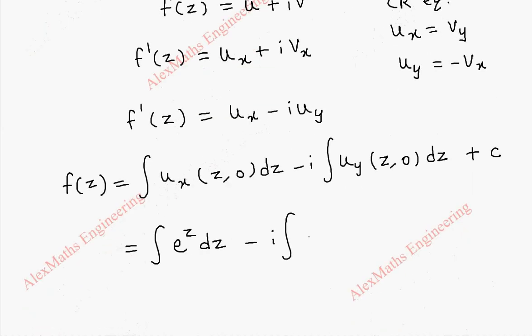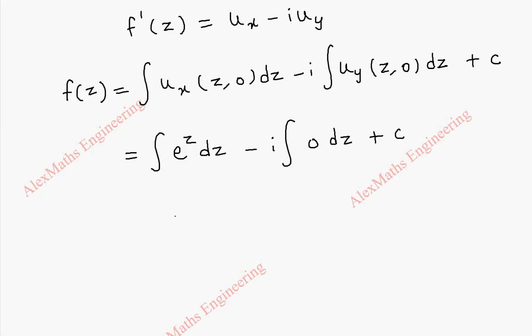We got it as 0, so this entire term is 0. So finally we have integral of e^z, which is e^z, and this is 0, plus c. So we got the analytic function f(z) as e^z plus c.